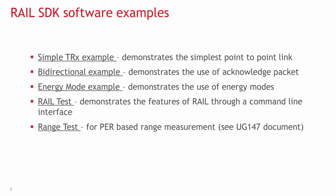The RAIL SDK includes example application code and related documentation to demonstrate the capabilities of the device and the RAIL library. These software examples are provided as source code to offer a starting point for application development. Included examples are: the simple TRX sample application, which enables a simple point-to-point link between two devices; the bidirectional sample application, which demonstrates the use of acknowledge packets; and the energy mode sample application, which demonstrates how to use energy modes in a RAIL-based application.